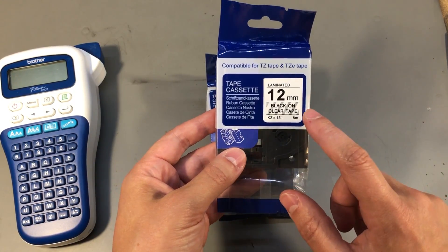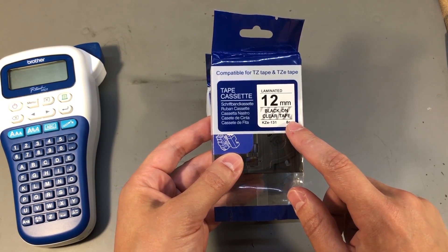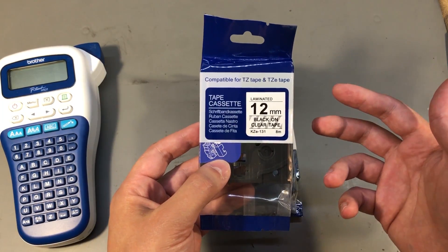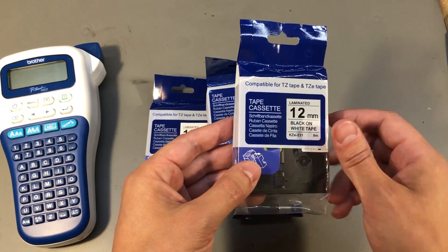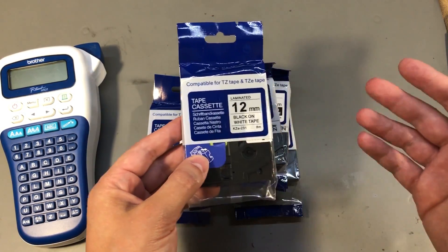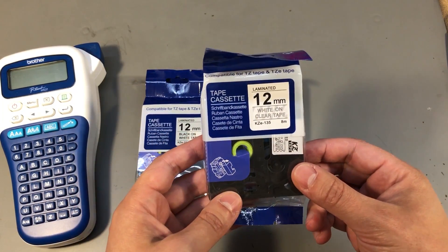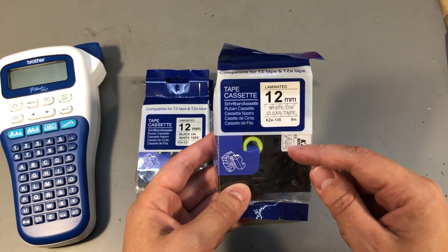I have black on clear tape which would be nice for sticking on a white surface and have only the black text visible as a nice contrast with the white background. Then I have some standard black on white because I use this stuff everywhere for labeling everything. This is white on clear tape which would be good for sticking on a black surface to have just the white text visible.